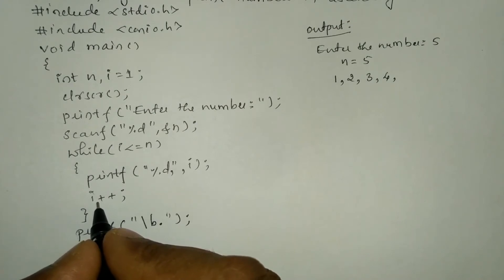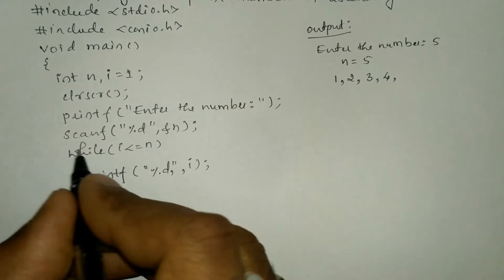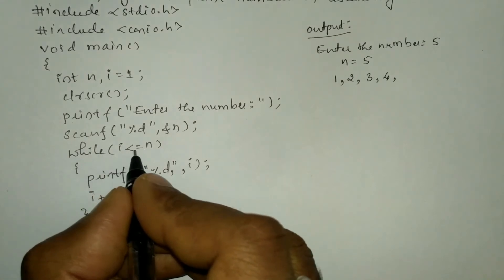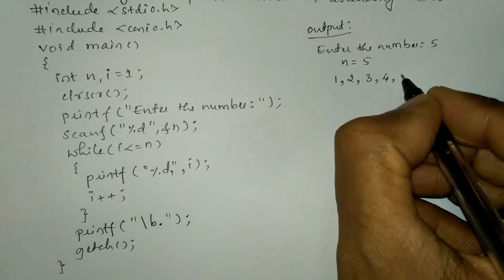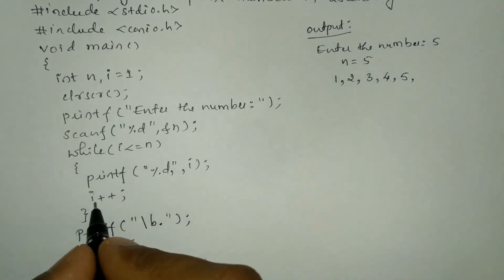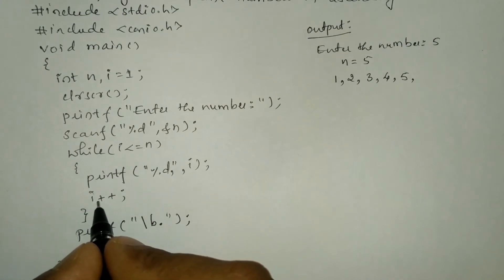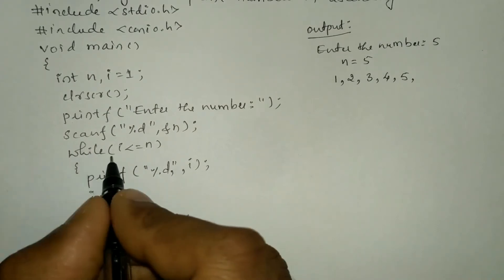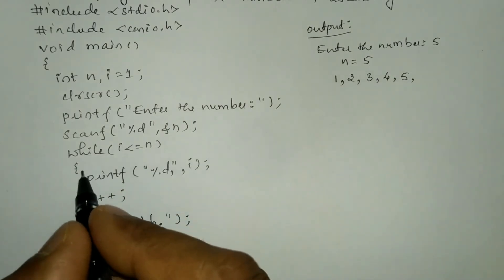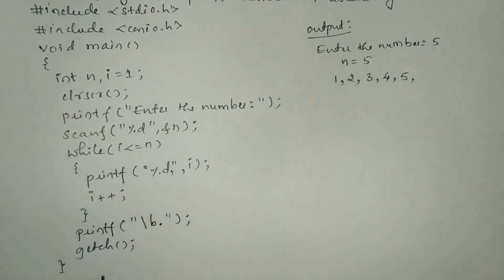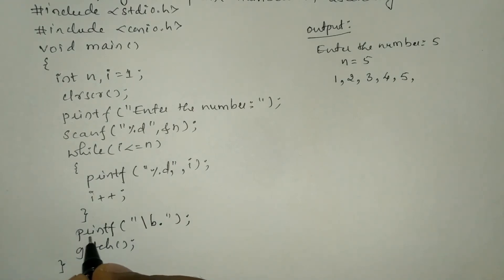Now five plus one becomes six. Again control transfers to while — six is less than or equal to five, no, the condition fails. Once the condition fails, control comes out of the while looping construct and it is going to execute the next statement.